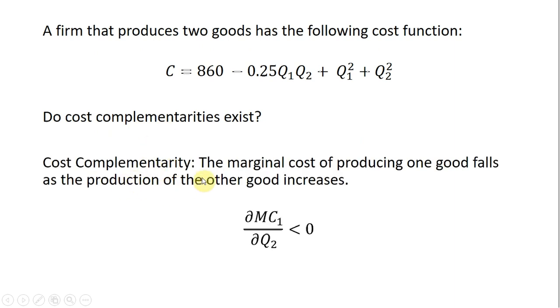Let's first define what that means. The marginal cost of producing one good falls as the production of the other good increases. So if we take the marginal cost of producing good 1, what happens to the marginal cost of producing good 1 as we produce more of the other good, good 2?